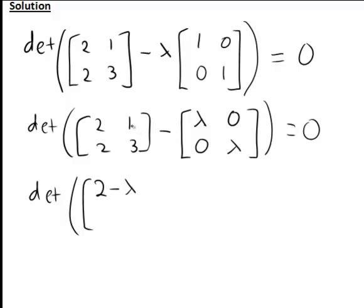second column element will be 1 - 0 is just 1. In the second row and first column, it will be 2 - 0 is 2. And in the second row, second column, 3 - λ. So we're solving for λ such that the determinant of the following matrix is equal to zero.